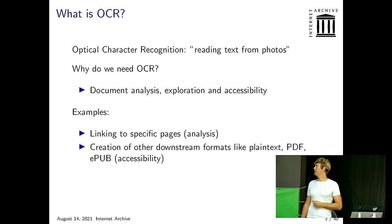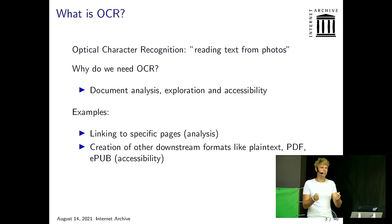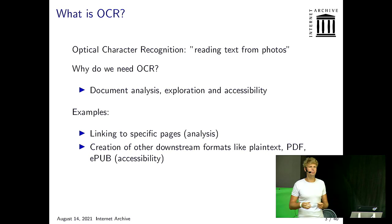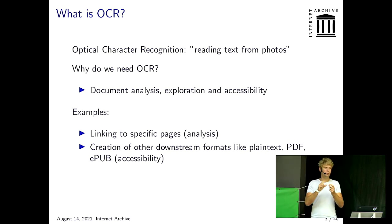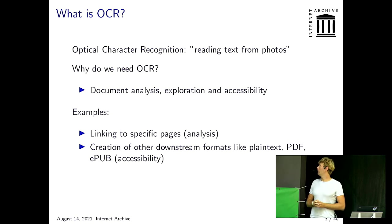Another thing we do is create other formats. If you upload a book as photos, we run OCR and then make an EPUB from it, entirely based on what the computer can find on the photos. Sometimes there will be a typo, but generally it's quite neat and very small, so you can download it quickly, whereas the full photos are very large and don't scale well to small displays. We also make PDF and plain text files.